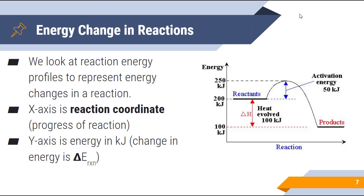We look at reaction energy profiles to represent energy changes in a diagram. The x-axis is known as the reaction coordinate — basically just the progress of the reaction. The y-axis is energy in kilojoules. The change in energy is known as delta E — delta means change and E refers to the energy. We look at whether the products are higher or lower than the reactants. If it is an endothermic reaction, delta E is positive; if it is an exothermic reaction, delta E is negative.